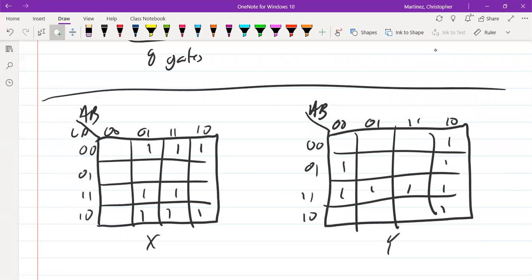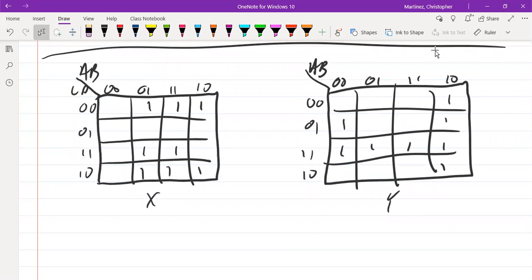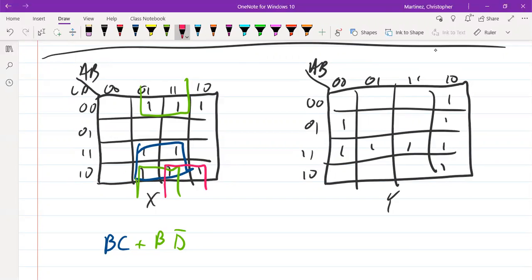Let's do another example. Here we have two four-variable K-maps and again let's solve it with optimization for each item. So let's solve X first. When we solve X we're going to look to do the largest grouping that we can. We're going to have a term in blue here, in dark blue. That is we have a group of four and that would be that I have B, C. Then I'm going to have a group of four in green and that's going to give me B, D bar. Then I'm going to have a pink group of four and on that pink group of four that would give me C D bar. So I have three terms for X.